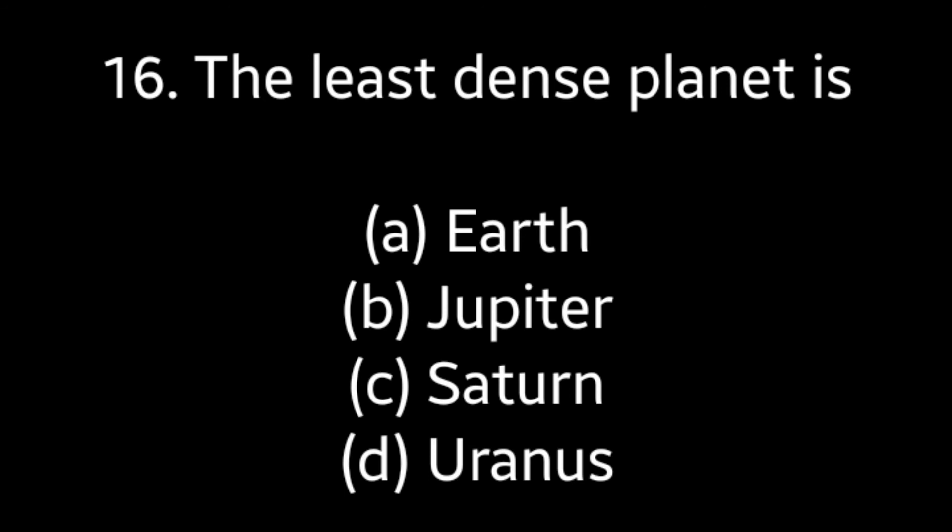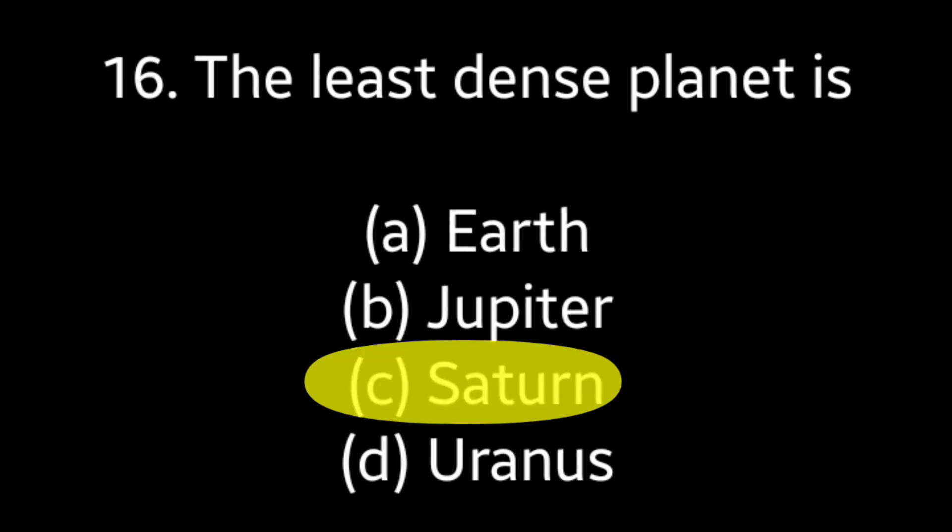Question number 16: The least dense planet is — Earth, Jupiter, Saturn, Uranus. Answer is option C — Saturn.